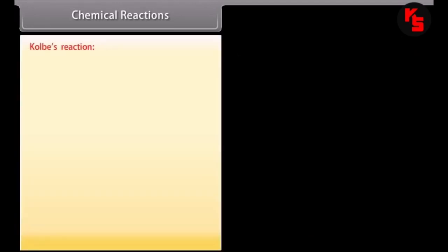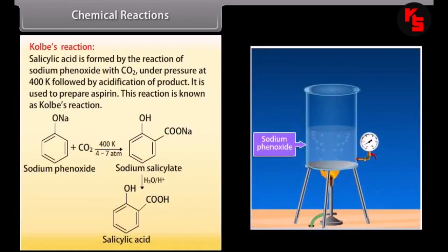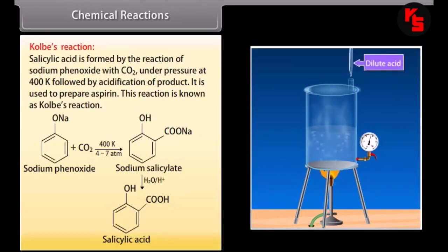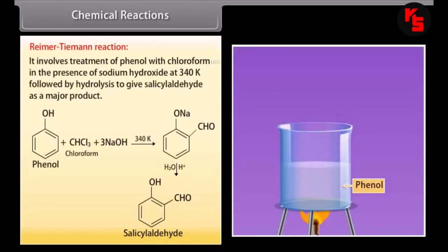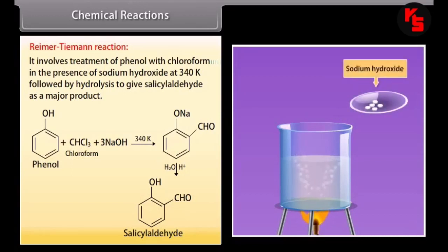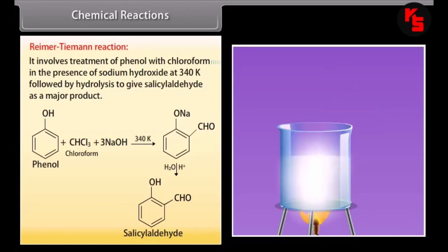Kolbe's reaction: salicylic acid is formed by the reaction of sodium phenoxide with carbon dioxide under pressure at 400 K, followed by acidification of the product. It is used to prepare aspirin. This reaction is known as Kolbe's reaction. Reimer-Tiemann reaction involves treating phenol with chloroform in the presence of sodium hydroxide at 340 K, followed by hydrolysis to give salicylaldehyde as the major product.